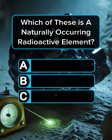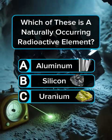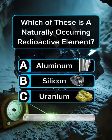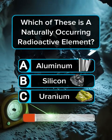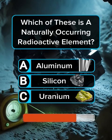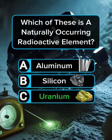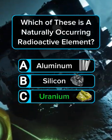Question 1. Which of these is a naturally occurring radioactive element? Answer C: Uranium.